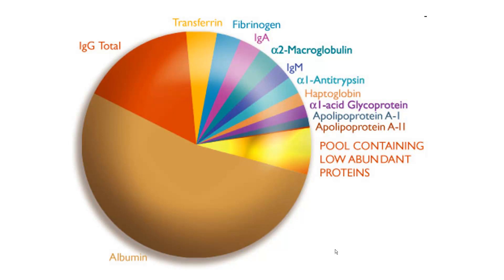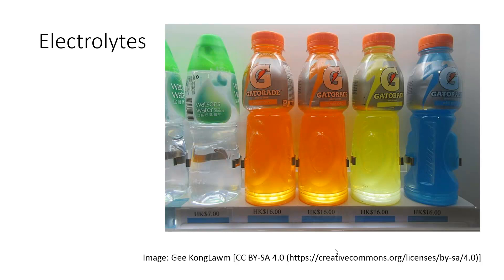Before we finish the video, let's look at the last 3% of blood plasma. One percent or less of the total plasma volume is comprised of electrolytes. Electrolytes are anything that ionizes when you put them in water, and they are very important for our overall physiology. Sodium, potassium, calcium, magnesium — all of these ions enable things like brain cell function and muscle contraction. Even though they're a very small component of plasma overall, just because they're present in small amounts doesn't mean they're not important.